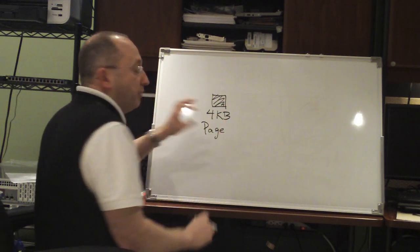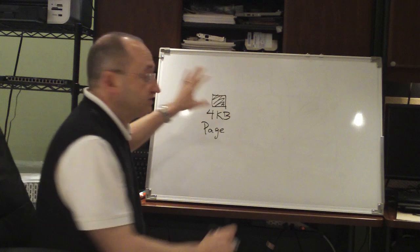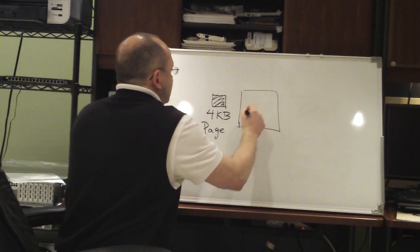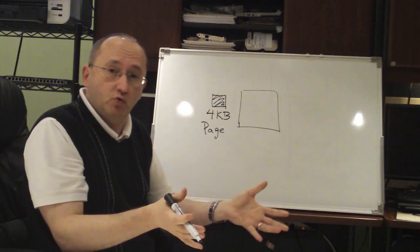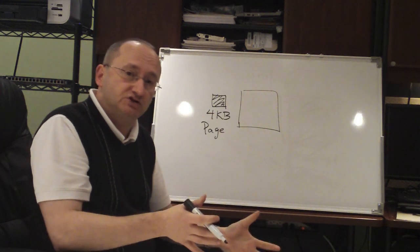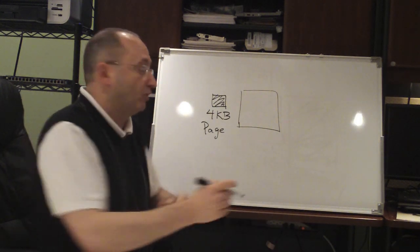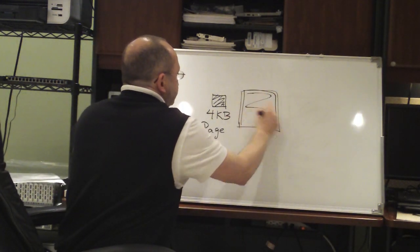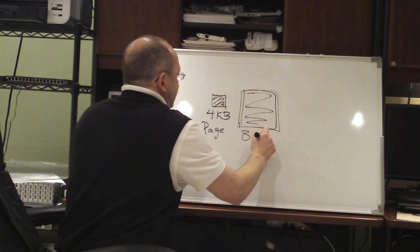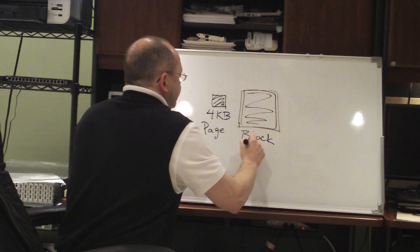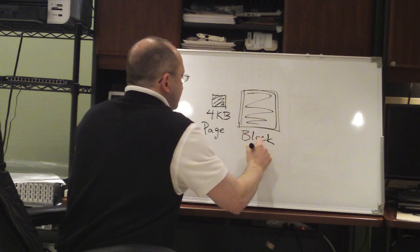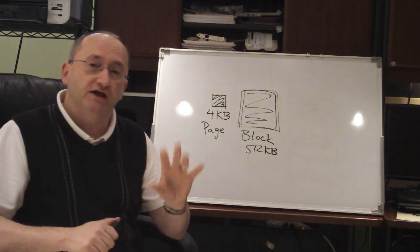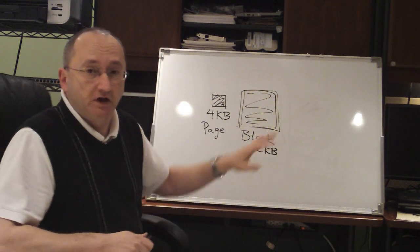Then we combine these pages into something called a block. Typically it's about 128 pages in a block. So all of this is a block, and that gives us about a 512 kilobyte block. That's what SSDs are built from.